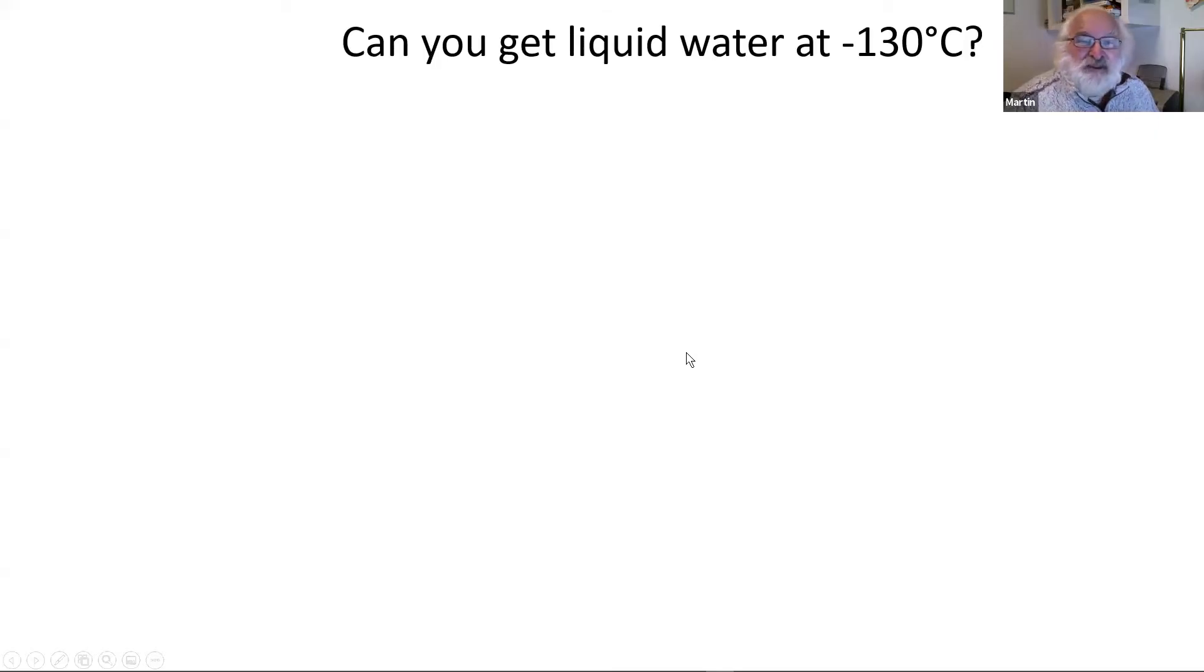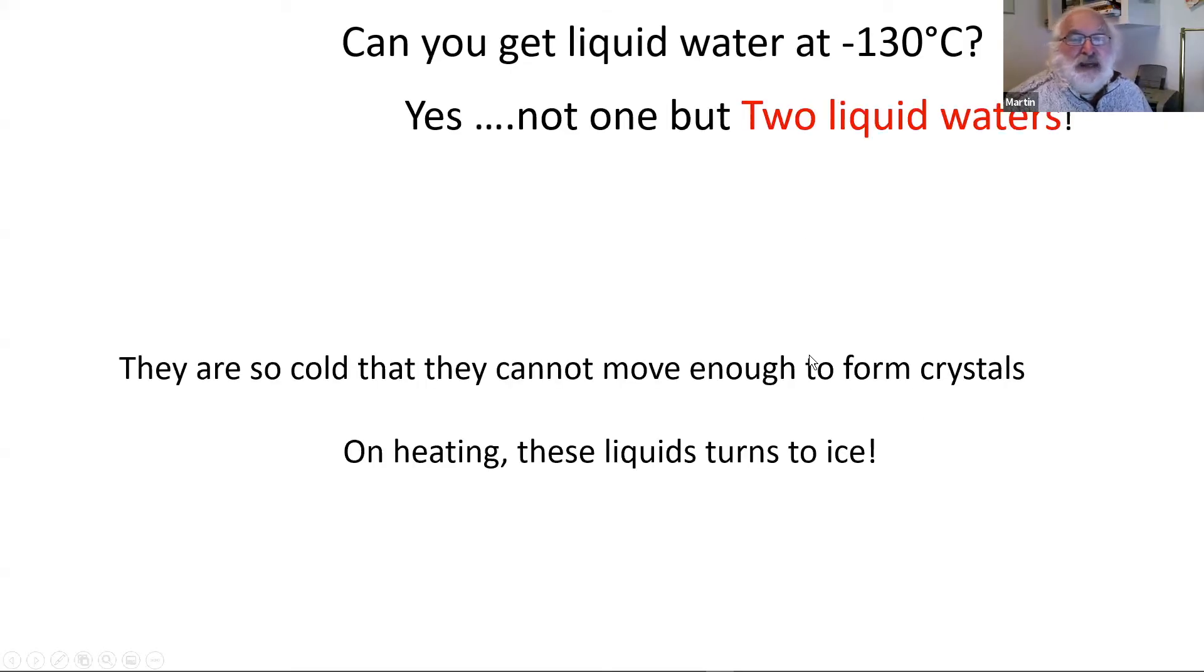Another very strange thing about water is that you can get liquid water at minus 130 degrees centigrade. That's a long way down. And not only can you get liquid water, you can get two liquid waters at that low temperature, and they're so cold that they're too cold to form ice. You have to warm them up before these waters, these liquid waters, form ice.